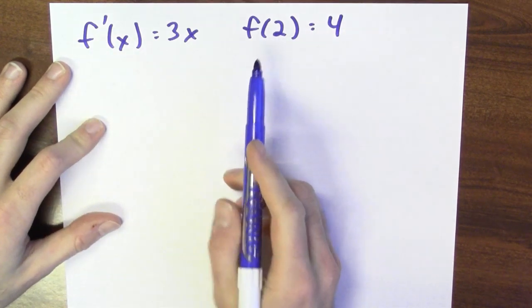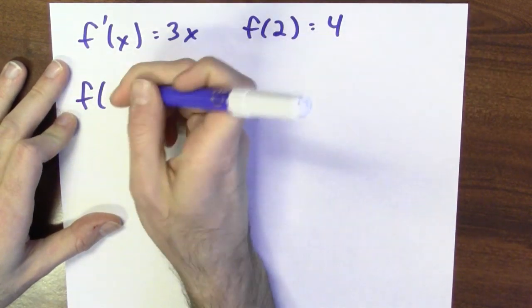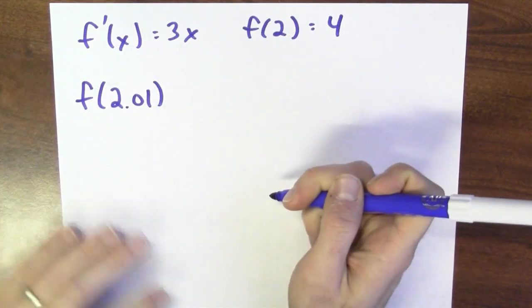Just knowing this information, without a rule for the function at this point, can I say anything about the function's value at, say, 2.01?